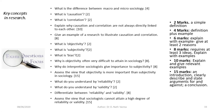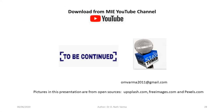What do you understand by reliability? (2 marks). What do you understand by validity? (2 marks). Differentiate between validity and reliability (8 marks). Assess the view that sociologists cannot attain a high degree of reliability or validity (15 marks). I thank you very much for your attention. I wish to remind you that the pictures in this presentation are from open source — unsplash.com, freeimages.com and pexels.com. I'll see you soon, goodbye.